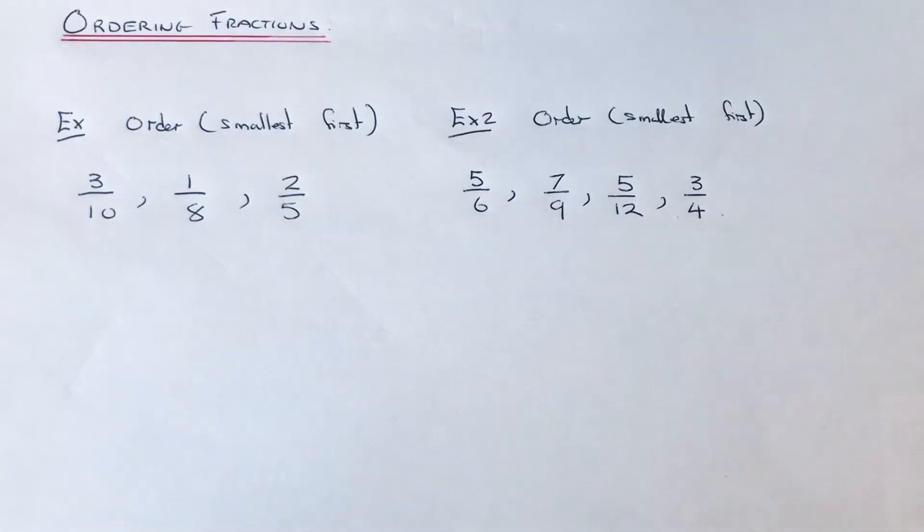Hi guys, welcome back. This is Maths 3000. I'm going to show you how to order a set of fractions. To order fractions, you'll need to convert them so that they all have the same denominator. The bottom number must be the same, and then it's pretty easy to sort them.